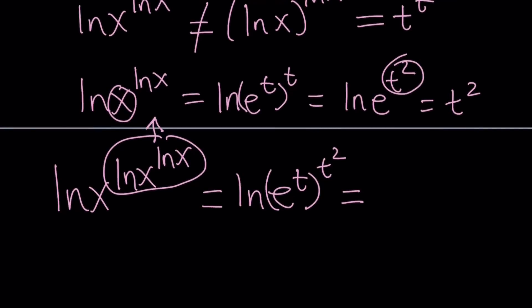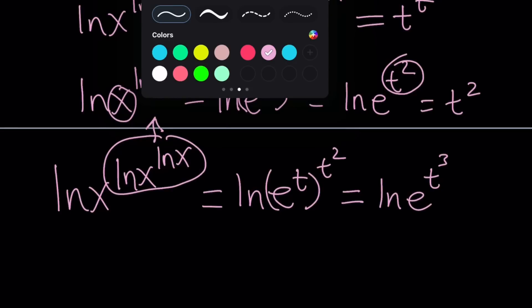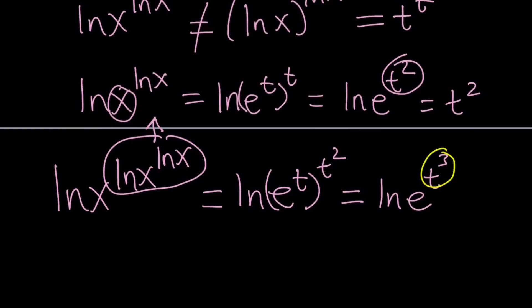Now what is e to the power t to the power t squared? You're supposed to multiply the exponents. t times t squared is t cubed. That's nice. Yes, absolutely. It's always t time. That gives you ln of e to the power t cubed. And as you know, t cubed can be moved to the front, giving us t cubed times ln e, which is t cubed. So this expression actually is equal to t cubed. Nice.